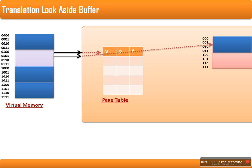This will be counted as the first memory access because the page table is also stored in RAM. So whenever a virtual address has to be accessed, in order to fetch the physical address, the frame number has to be fetched. In order to fetch that frame number for the corresponding page, the page table has to be accessed. So accessing the page table in RAM is counted as the first memory access. After finding the frame number in the page table, it is combined with the offset to form the physical address — this is the second memory access. So a virtual address actually involves two memory accesses.